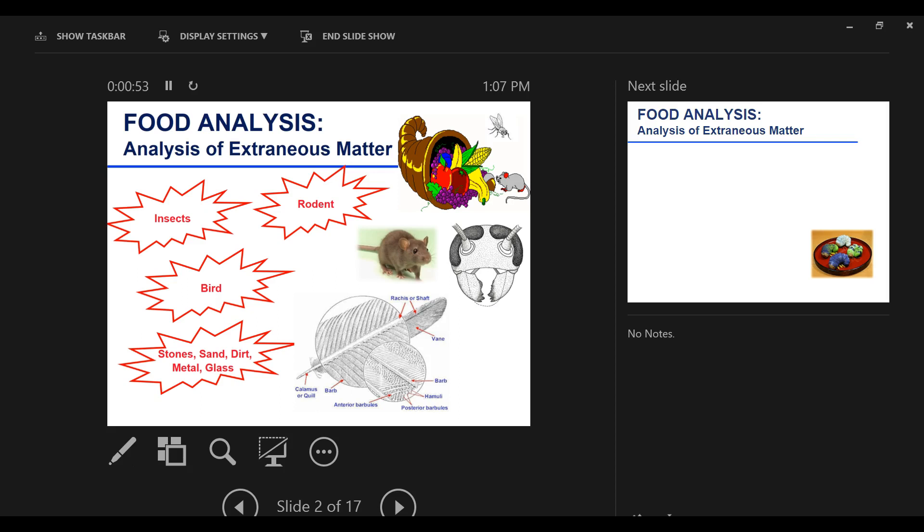This is a very common analysis that you would do on incoming ingredients and final products. You want to be sure that they follow required standards, and there are defect action levels for the number of insect parts that are available or rodent hair. We will learn that it's inevitable - we are consuming insects, we are consuming rodent hair. Consider it protein, added protein intake.